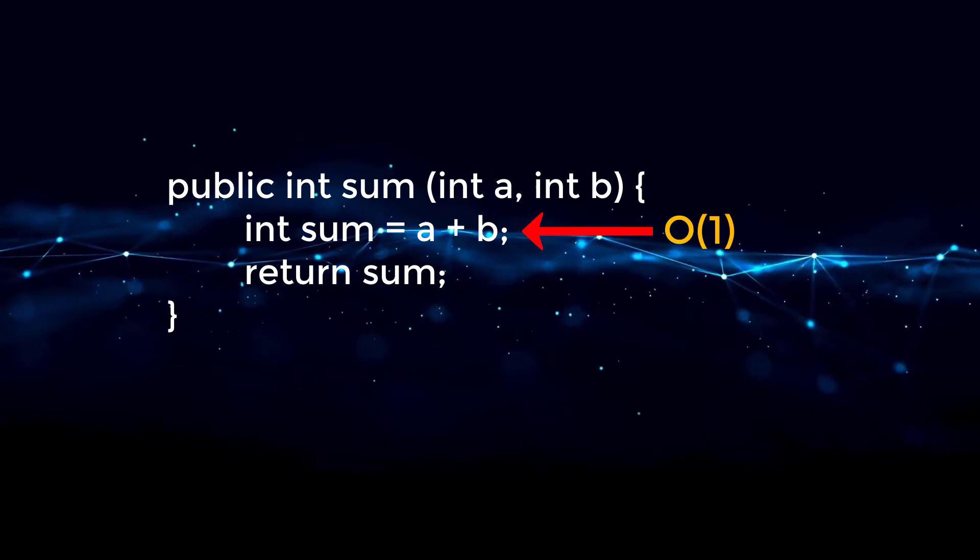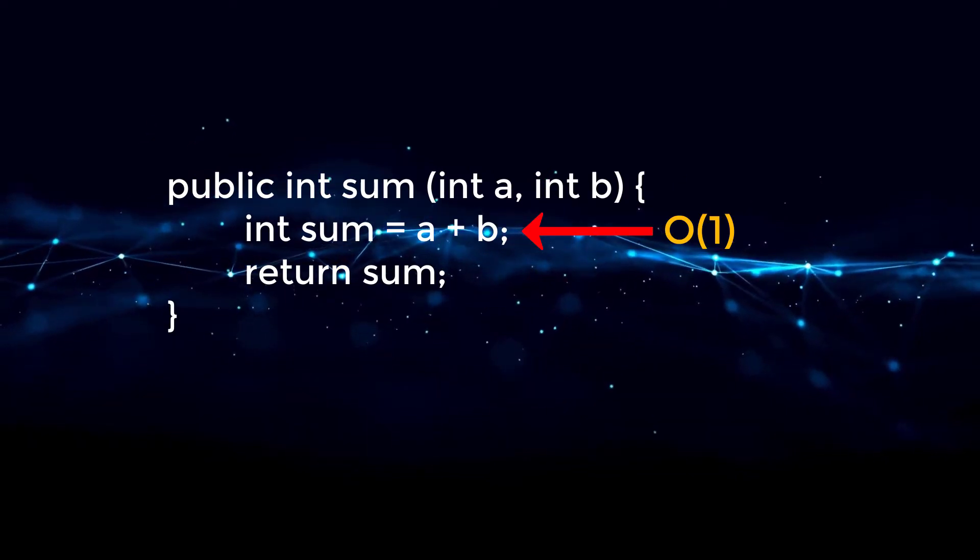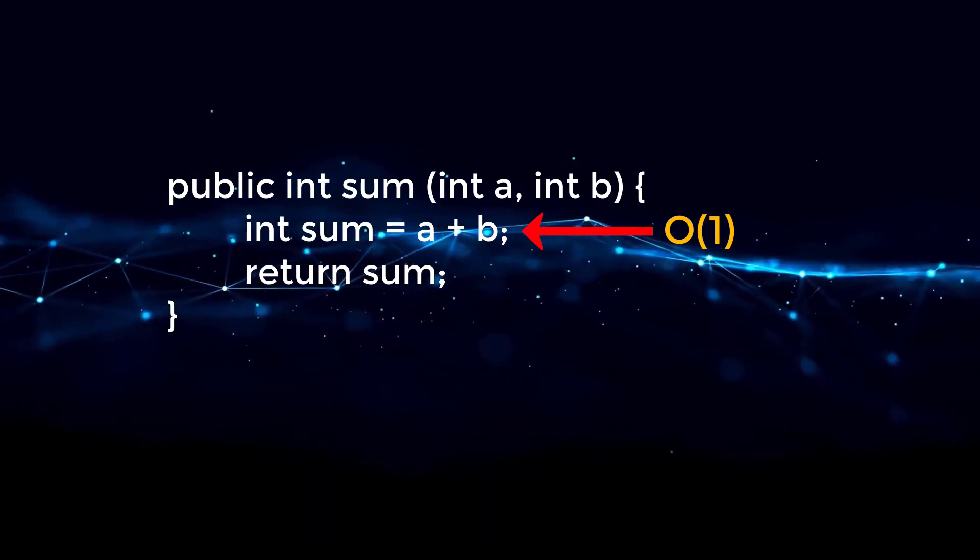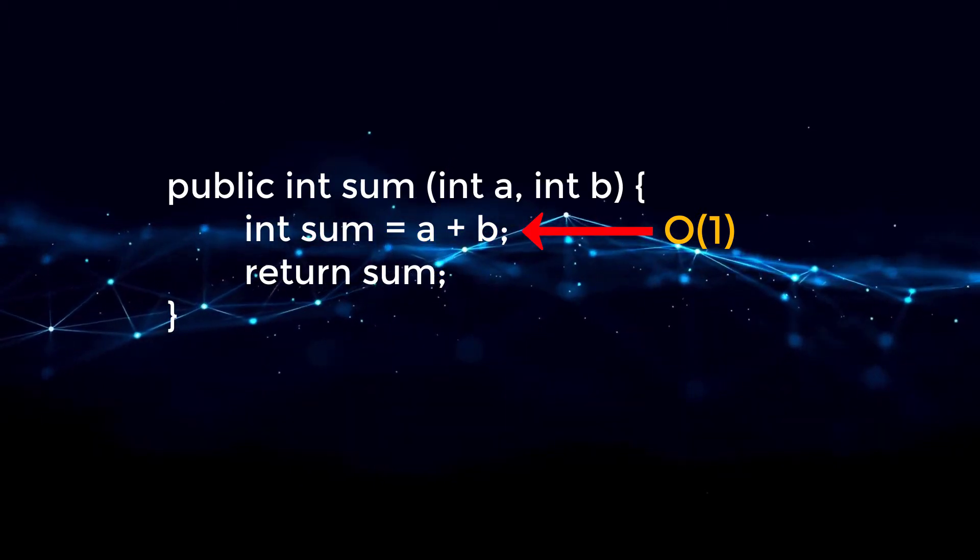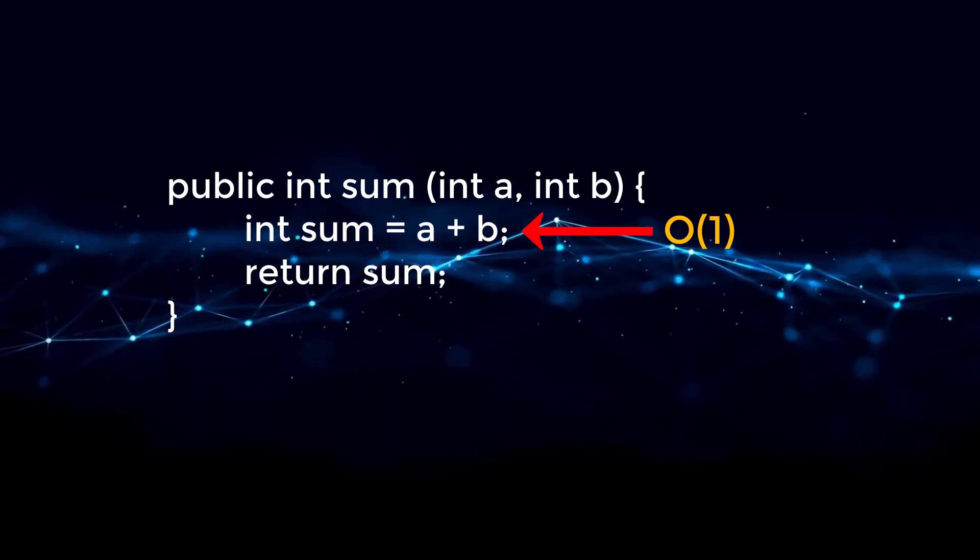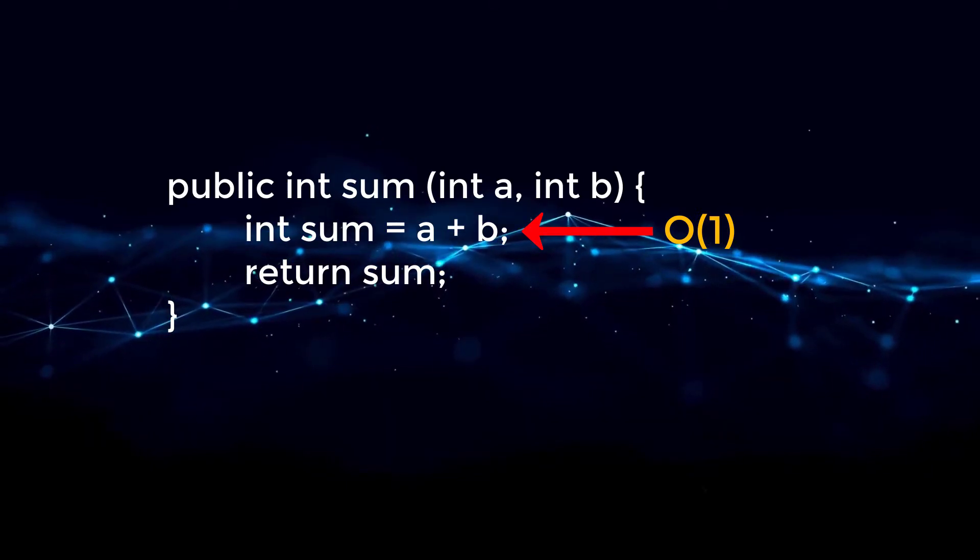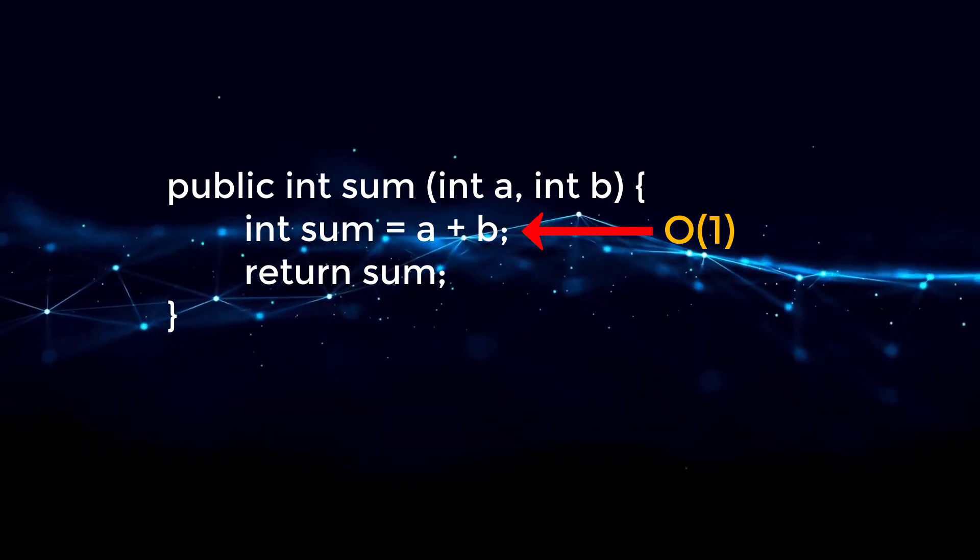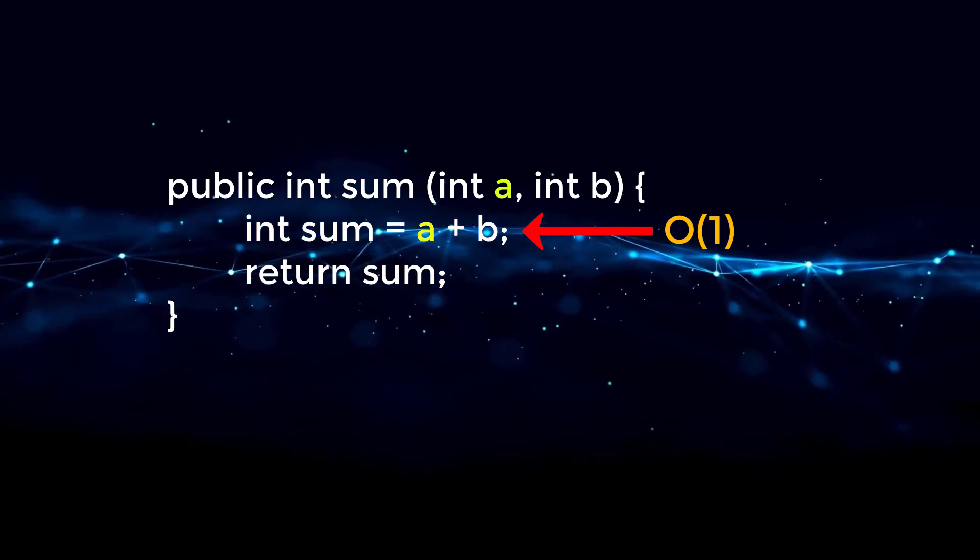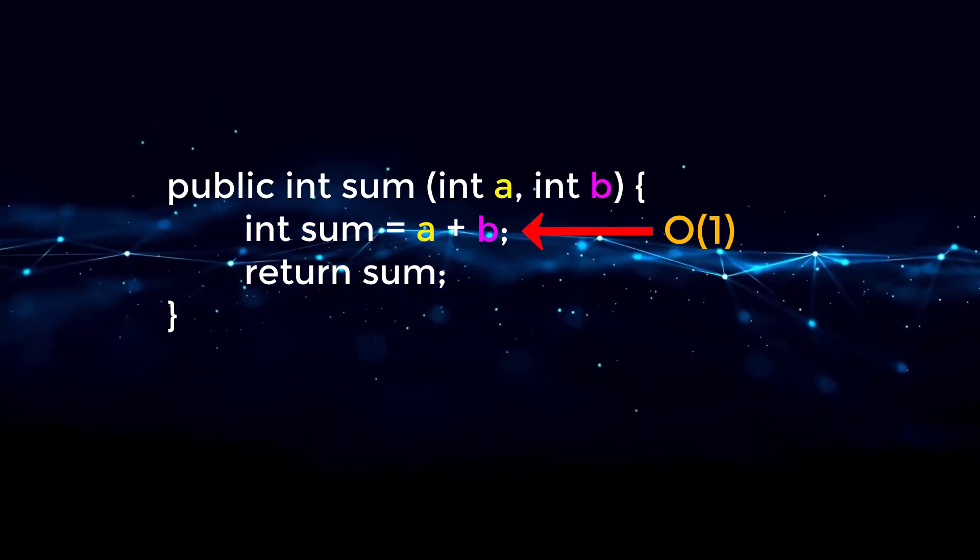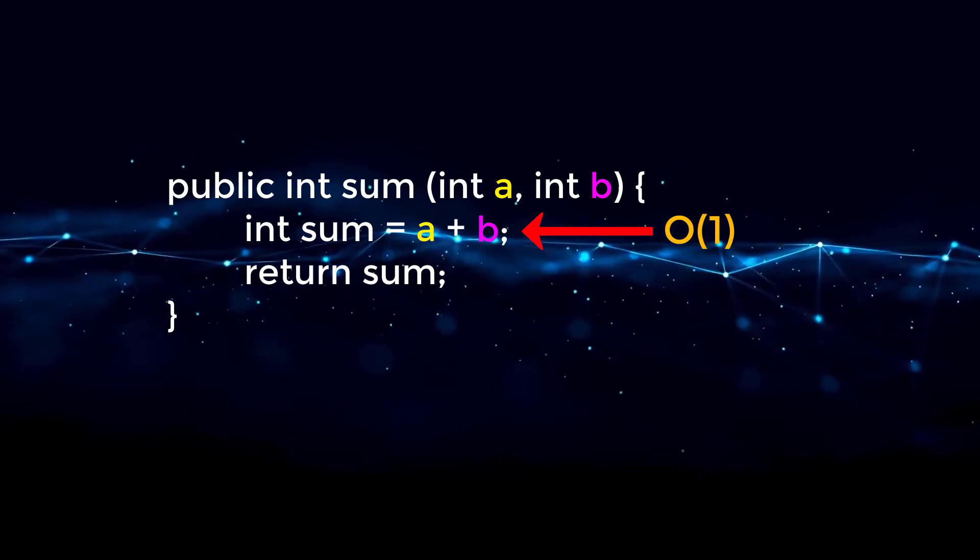This first line is going to take constant time to be ran, and an easy way to understand this is you can ask yourself, is this line going to take longer if our input changes? And the answer to that question for line one is no, it's not going to take longer, because we are always taking in only two numbers, A and B, and performing the computation to sum up two numbers will always be the same.